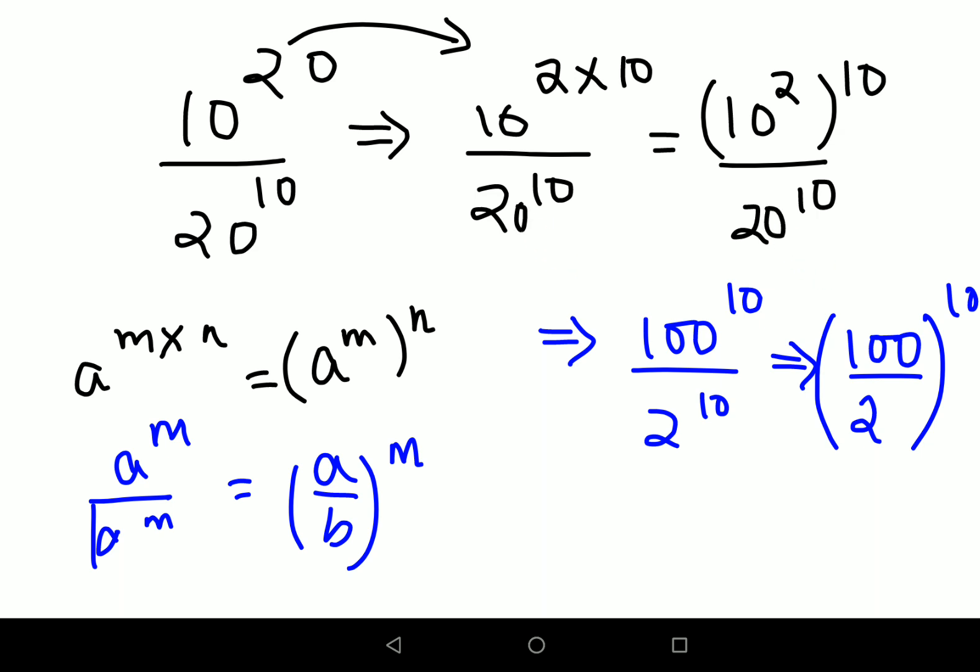100 divided by 20 is 5. So now what you're left with is just 5 raised to 10. This could be your answer, but if you look closely, all your options are given in terms of